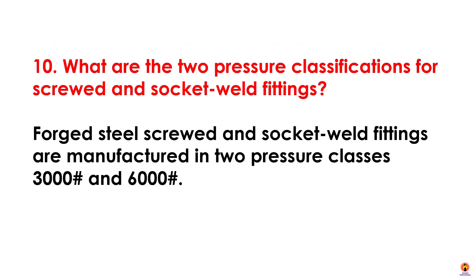What are the two pressure classifications for screw and socket weld fittings? Forged steel screw and socket weld fittings are manufactured in two pressure classes: 3000 rating and 6000 rating.